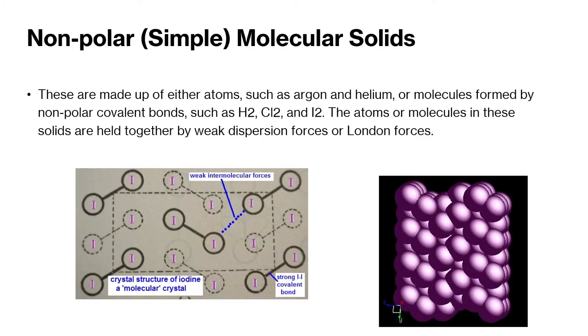So let's look at the first type that our syllabus looks at, the non-polar or simple molecular structures, solids. These are generally made up of either atoms such as argon and helium or molecules formed from non-polar covalent bonds such as H2, Cl2, and I2. The molecules, the atoms or molecules in these solids are held together by weak dispersion forces or London dispersion forces.